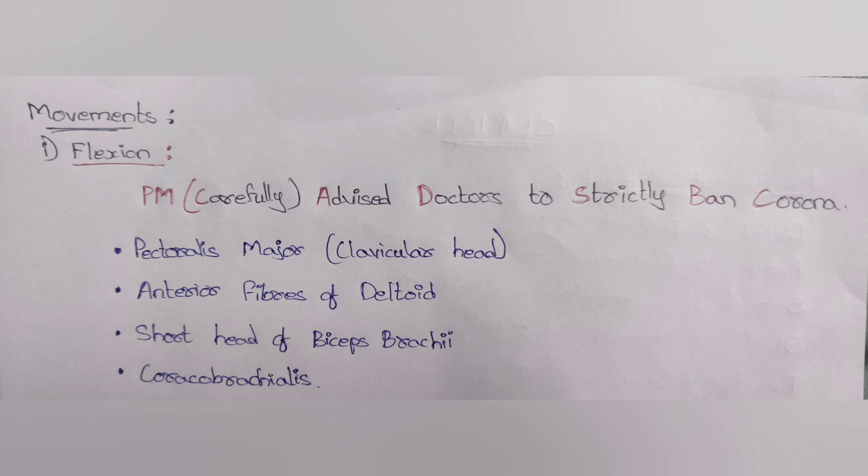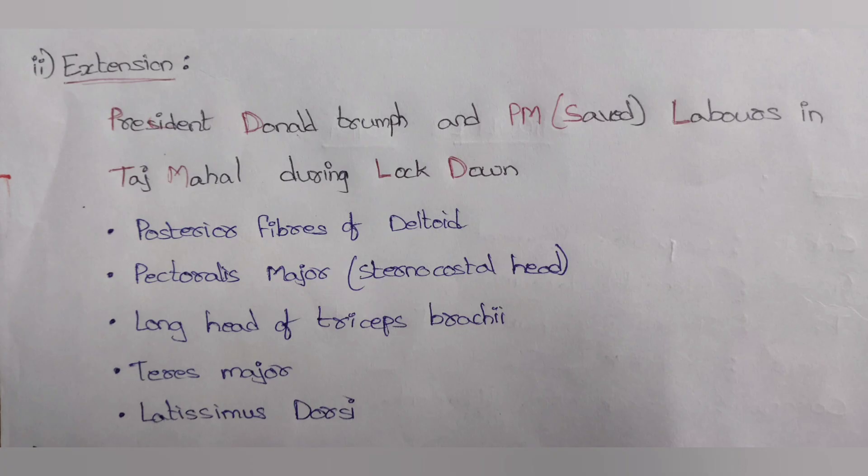Flexion muscles: pectoralis major (clavicular head), anterior fibers of deltoid muscle, short head of biceps brachii, and coracobrachialis. The next movement is extension, with the mnemonic 'president Donald Trump and PM saved labors in Taj Mahal during lockdown'.